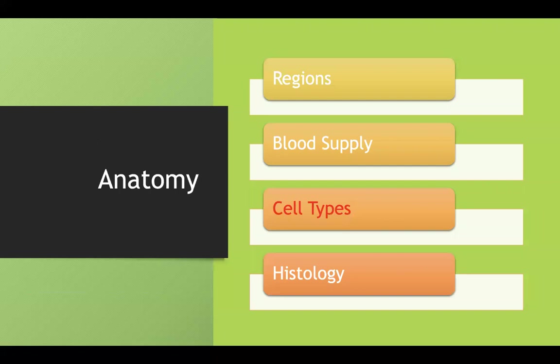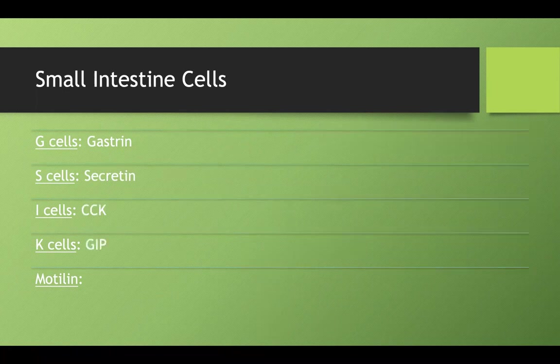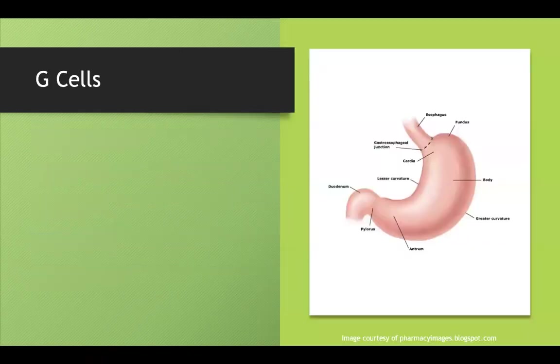Now let's talk about the cell types of the small intestine. G cells produce gastrin. S cells produce secretin. I cells produce cholecystokinin. K cells produce a hormone called GIP. And motilin helps facilitate migratory motor complexes, or MMCs. We'll go over each of these five, starting with G cells.